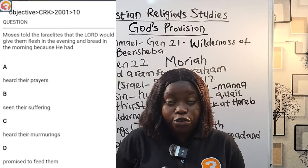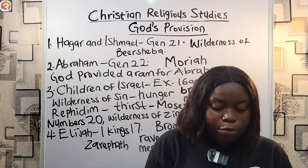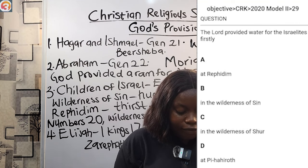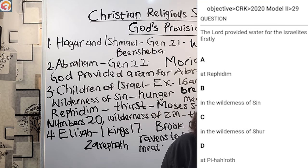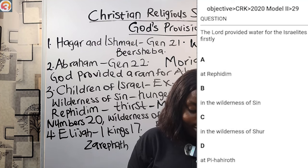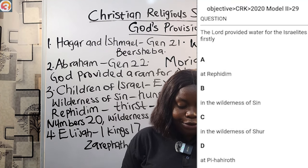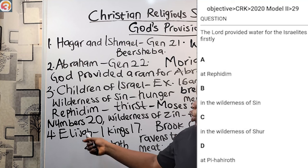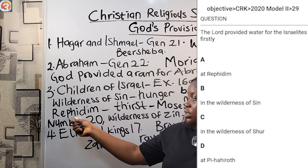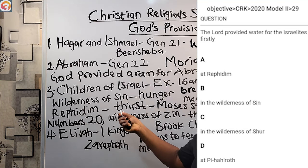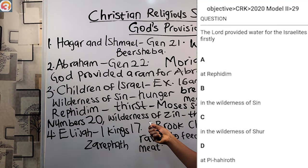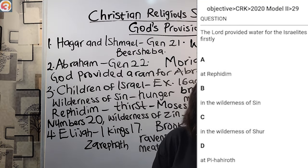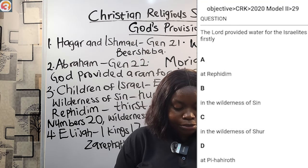This is a question from 2020: The Lord provided water for the Israelites firstly at — A. Rephidim, B. The wilderness of Sin, C. The wilderness of Shur, D. Pi-hahiroth. The answer is A — Rephidim. God first provided water for the Israelites at Rephidim before also providing it for them in the wilderness of Zin.